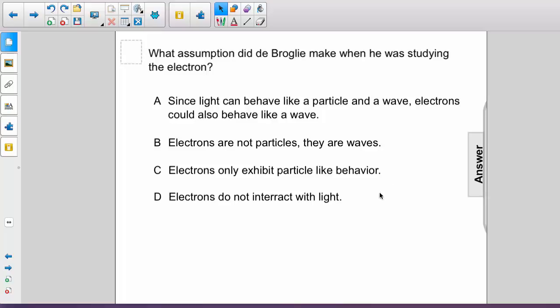Well, de Broglie made the assumption about the symmetry of all things. In other words, that we expect to see the same thing for all particles, whether they are light particles or whether they are matter particles. So he suggested that light can behave like a particle and a wave. If that's the case, then so can electrons. The answer is A.